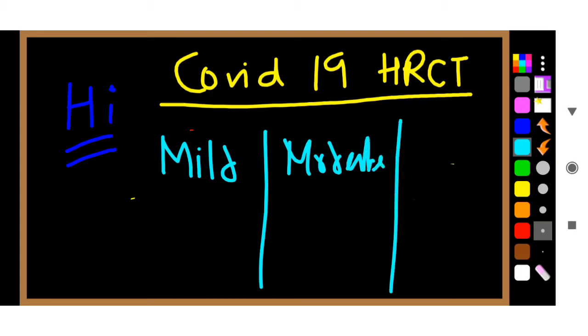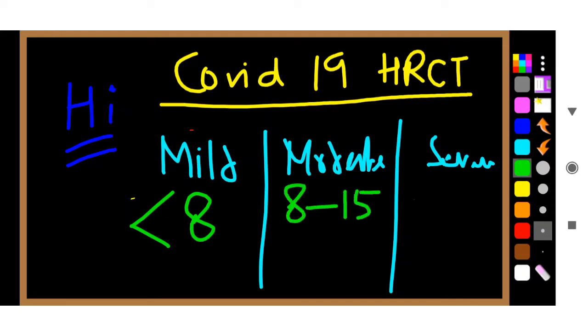For mild you have less than 8 score. So when the score is less than 8 it is mild. 8 to 15, when the score is 8 to 15 it is moderate. And greater than 15 means severe.